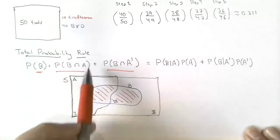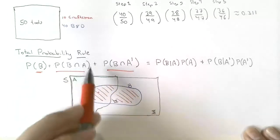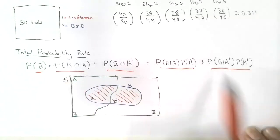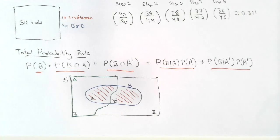A and A prime together make up the sample space, so we're looking for the intersection of B with what makes up the entire sample space. That is the total probability rule. We can use the multiplication rule to express these intersections in terms of conditional probabilities as well. The total probability rule is going to help us understand independence.